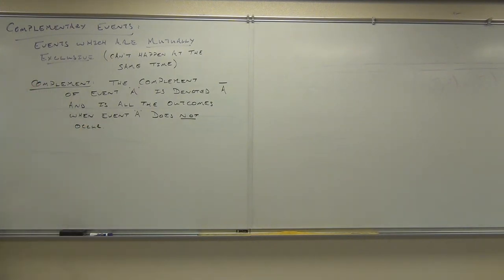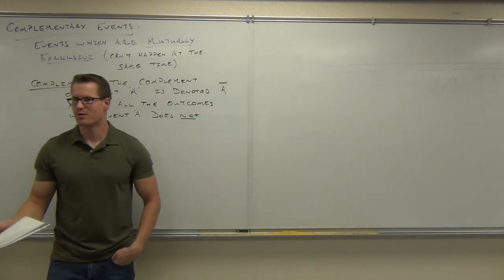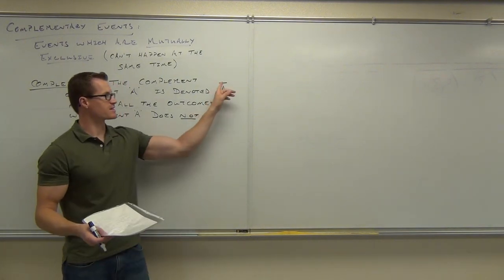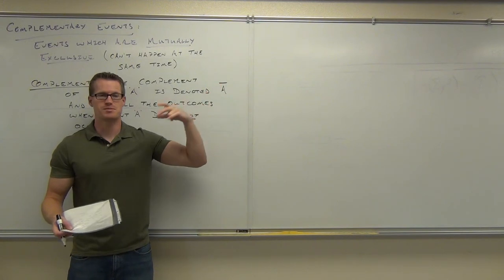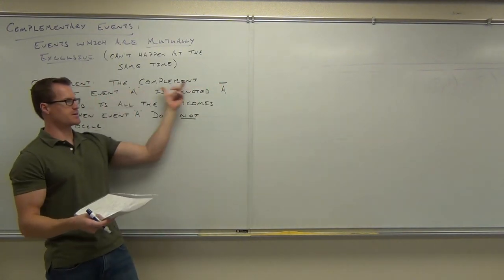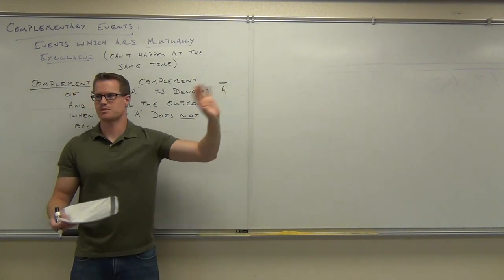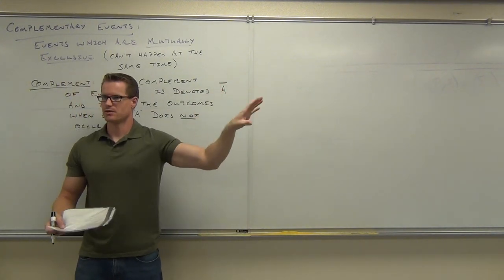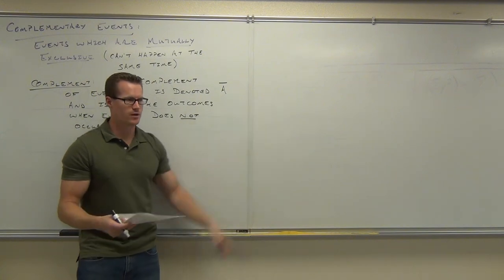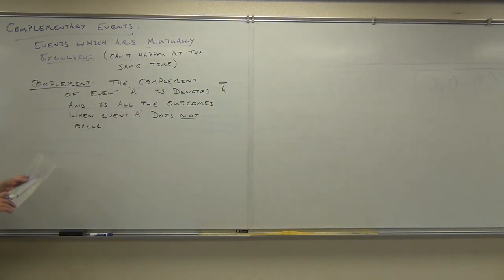The complement of A is all outcomes when event A does not occur. When you see the bar on top, think of it like a minus sign — minus, to me, means 'not.' So this means 'not A': everything else besides A, all the outcomes that don't satisfy A.